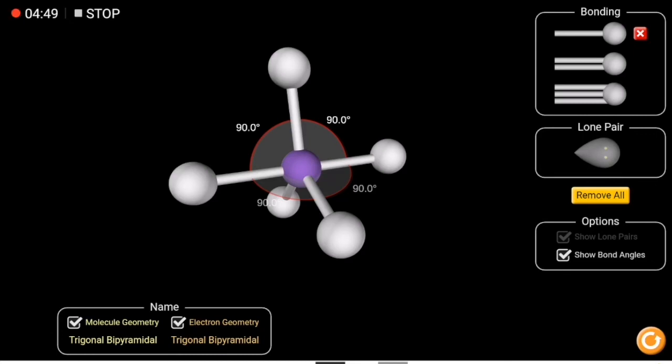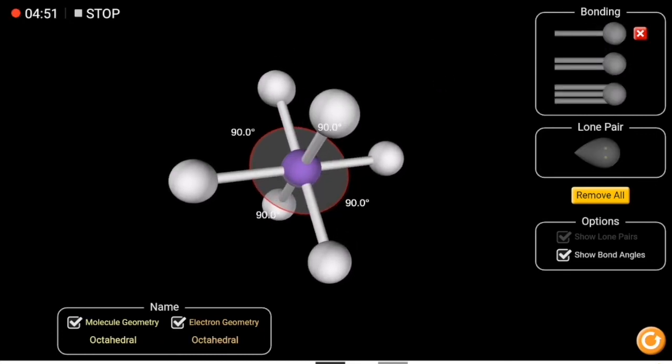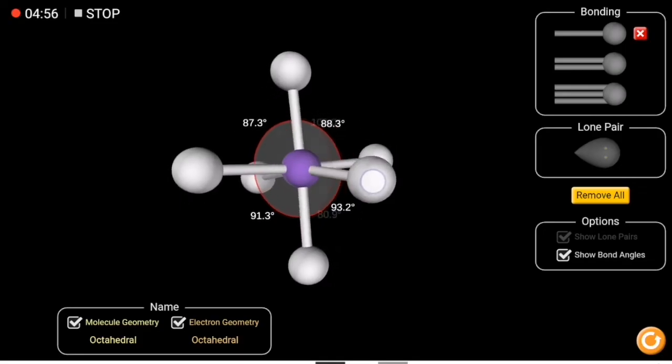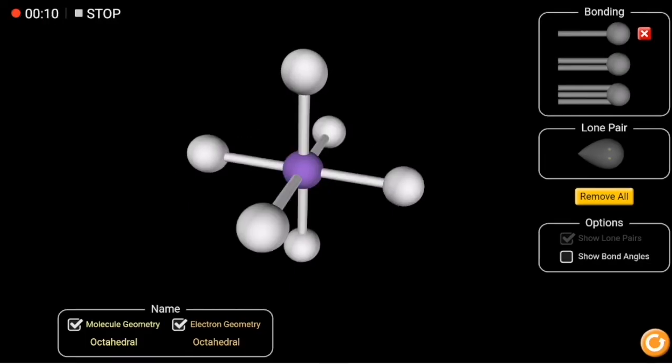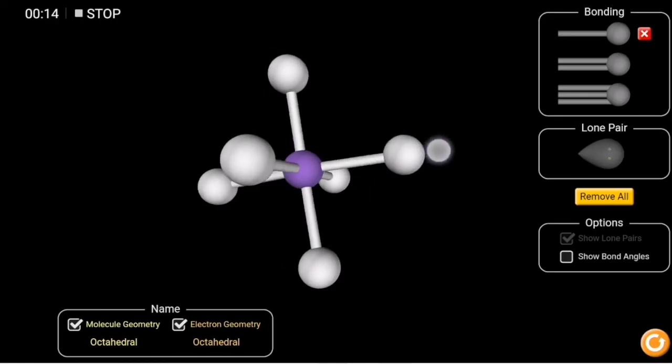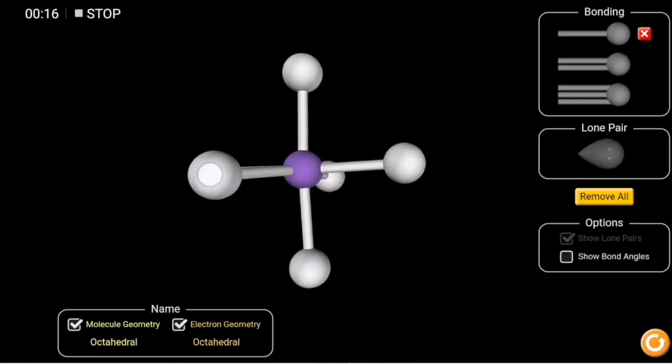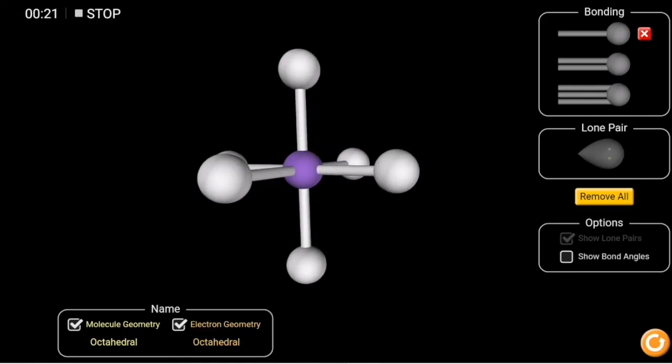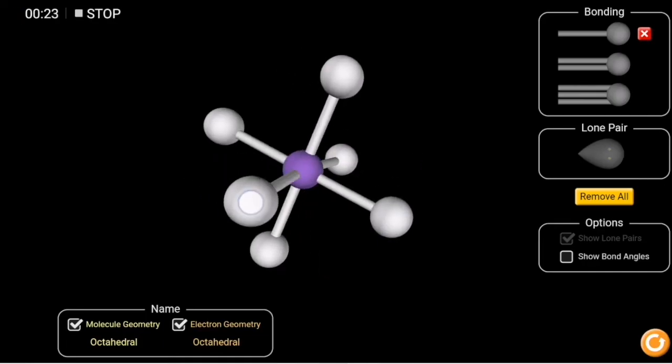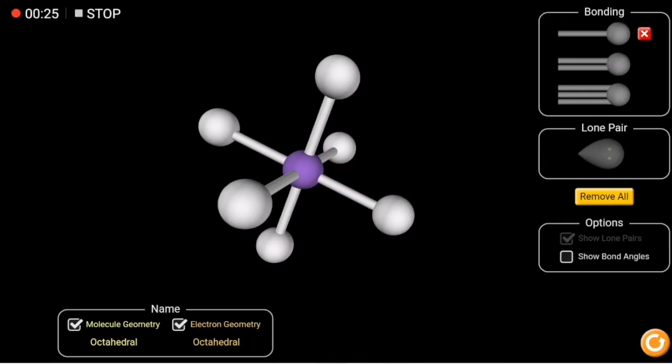And finally, another model is the octahedral where I have a central atom bonded to six atoms. And as you can see, the electron geometry is the same as the molecule geometry since no lone pair is introduced to it. So the best way to draw this is just to put a central atom and draw four atoms in a form of X shape around it plus one atom up and one atom down.